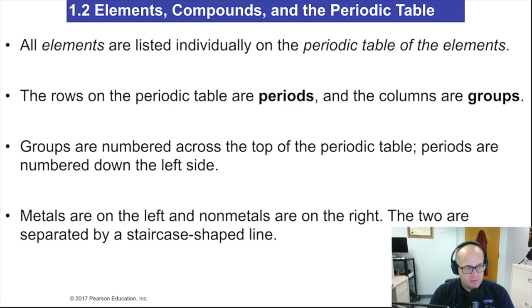Elements are individually listed on the periodic table. That means every element has its own square. In that square it tells you a lot of information about the element. It tells you the symbol of the element, sometimes the name, atomic numbers, and sometimes atomic mass, depending on the table you're looking at.